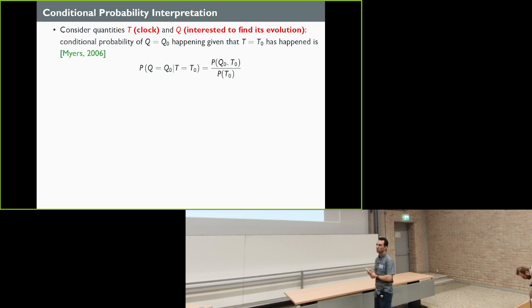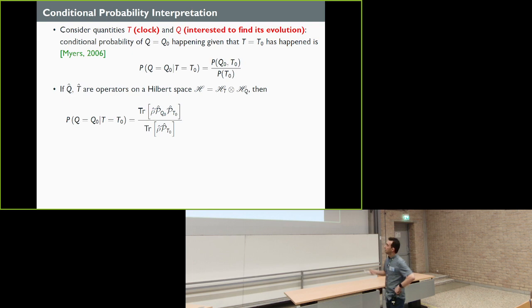Now, how you solve this, there are several ways to do that. There's a very nice review by Kuchar, I think 2011. The one I like and I'm working on is the conditional probability interpretation. What it tells you is that, basically I can ask probabilistic questions. Suppose that I create or basically construct a variable called t, I call it clock, out of canonical variables. I construct another variable q, this is the system or what I want to find its evolution with respect to this clock variable. And then I ask the question, what is the probability of q taking value q naught, given that t has already taken the value t naught. So this is the conditional probability, written as the joint probability of q naught and t naught divided by the probability of t naught. So it is the classical version.